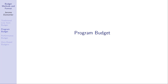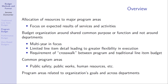Program budgets allocate resources to major program areas and focus on expected results of services and activities. Think about budget organization around a common purpose or function rather than around departments. For example, public safety would involve not only the fire and police departments but also the public health agency. Here the program budget focuses on the overall function of public safety rather than how many police cars or firefighters each department needs.